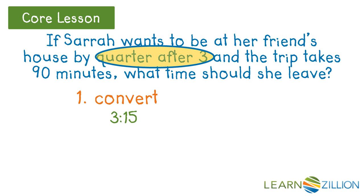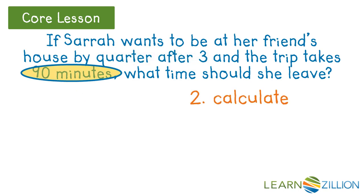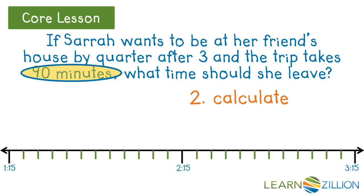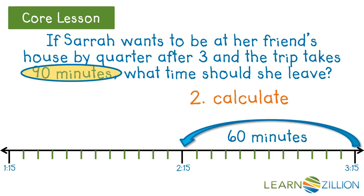Now we need to calculate. We are going to use a timeline as our diagram. We know she has to be there at 3:15, so the end time is 3:15. We know the trip took 90 minutes, which is less than two hours, so the timeline covers two hours. This makes the beginning of our timeline 1:15. Now we need to calculate backwards 90 minutes — we know one hour equals 60 minutes.